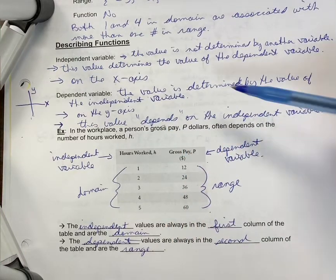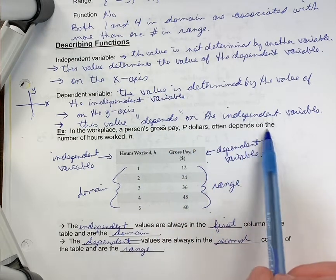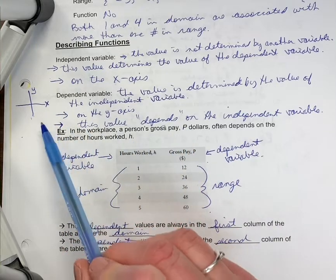Let's look at this example. In the workplace, a person's gross pay, P dollars, often depends on the number of hours worked, H. So our variables are P and H rather than X and Y.